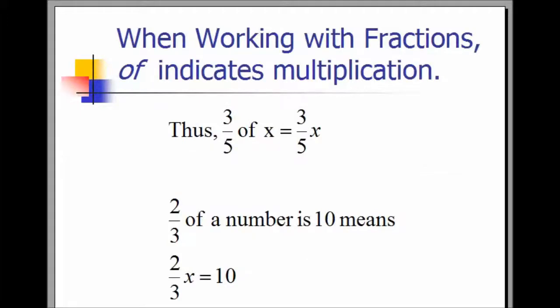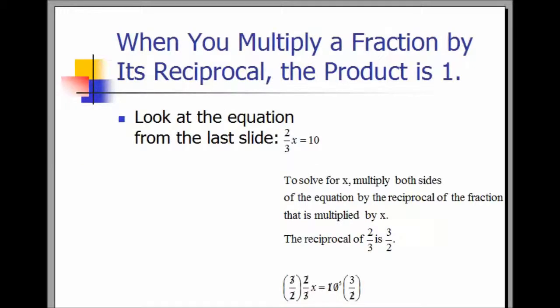When working with fractions, 'of' indicates multiplication. Thus, three-fifths of x equals three-fifths x. Two-thirds of a number is 10 translates into the equation two-thirds x equals 10. When you multiply a fraction by its reciprocal, the product is 1.